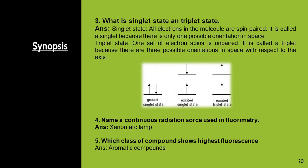What is singlet and triplet state? In singlet state all the electrons in the molecules are spin paired — it is called singlet because there is only one possible orientation in space. In triplet state one set of electron spins is unpaired — it is called triplet because there are three possible orientations in space with respect to the axis. In the diagram you can see the ground singlet state, next excited singlet state where spins are paired, and in triplet state spins are unpaired. Name a continuous radiation source used in fluorimetry — it is the xenon arc lamp. Which class of compound shows highest fluorescence? Aromatic compounds show the highest fluorescence.